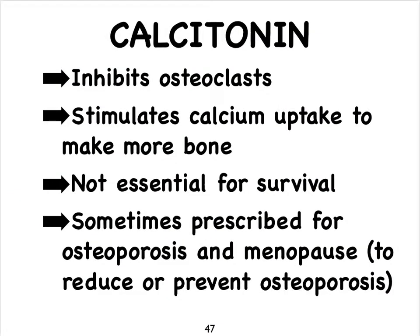The thyroid also produces a calcium-regulating hormone called calcitonin. Calcitonin works opposite to parathyroid hormone, which we'll look at when we get to the parathyroid glands. Calcitonin inhibits osteoclasts and stimulates osteoblasts, promoting the deposit of new bone tissue and allowing calcium to be taken out of the blood. It is not considered an essential hormone for survival in adults, but it is sometimes prescribed to menopausal women to help slow the process of osteoporosis.